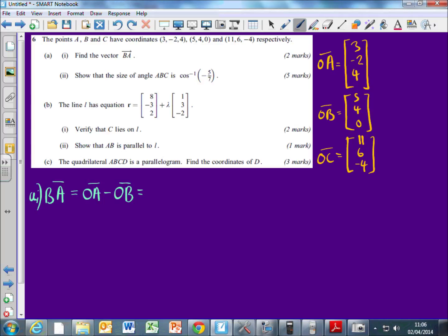Okay, so I've got O to A, I just wrote it over here. It's 3, negative 2, 4. And I've got O to B, it's 5, 4, 0. And I just take them away from each other. So it's 3, take away 5, is that minus 2?